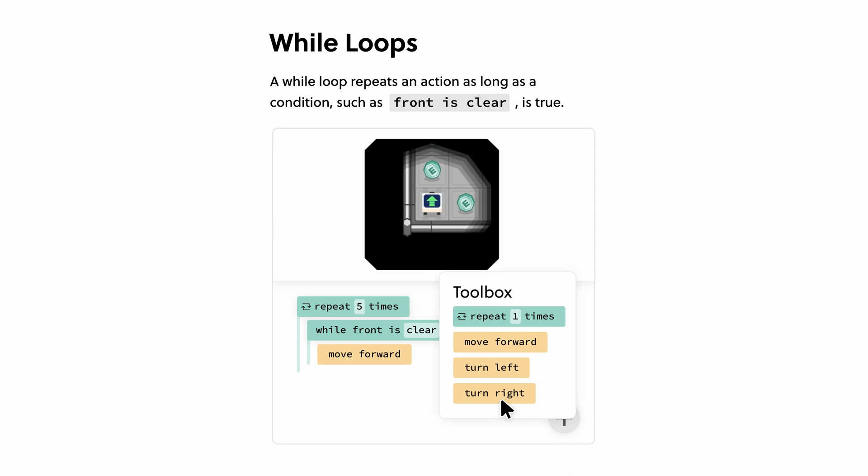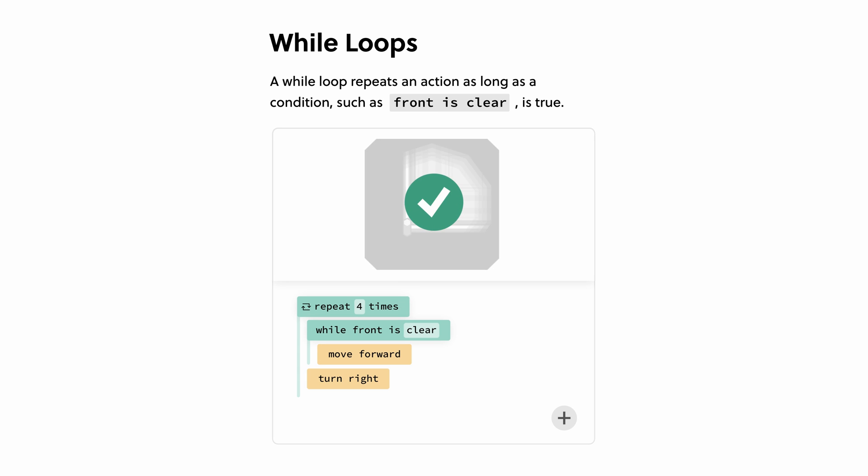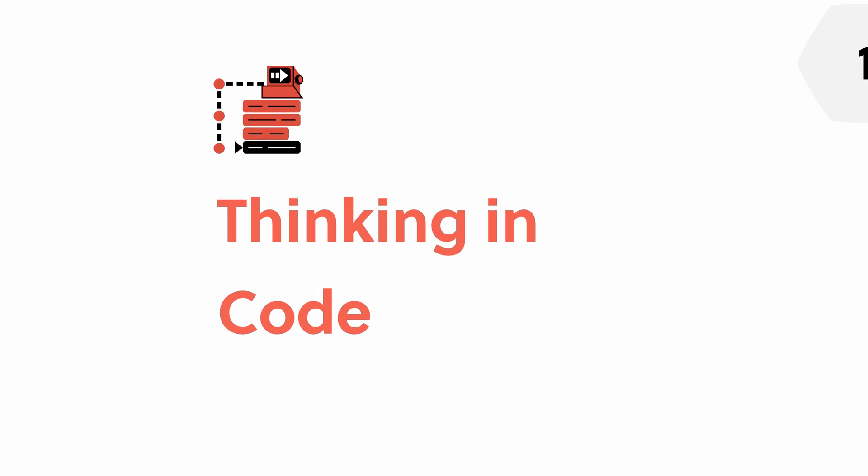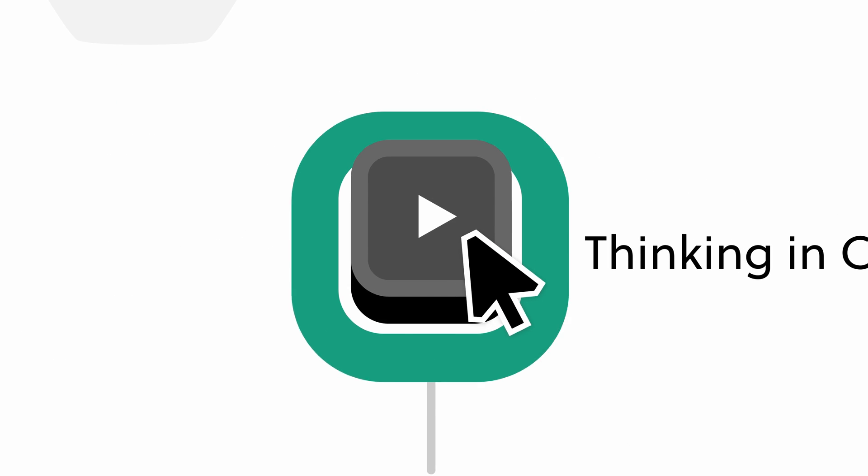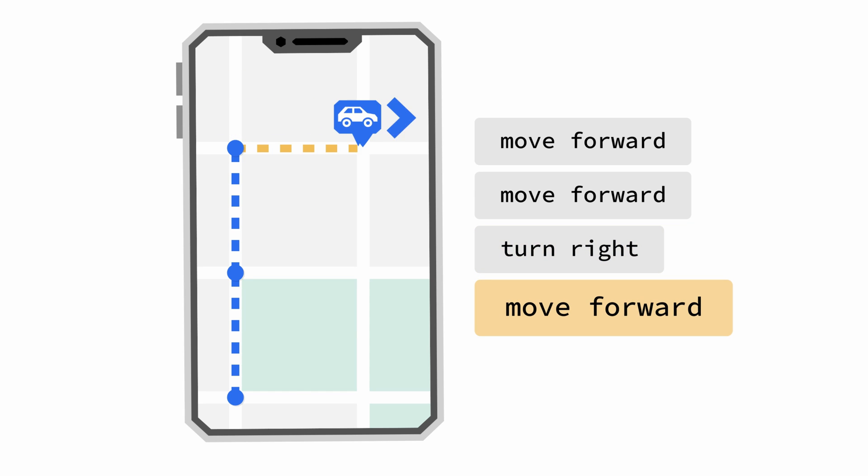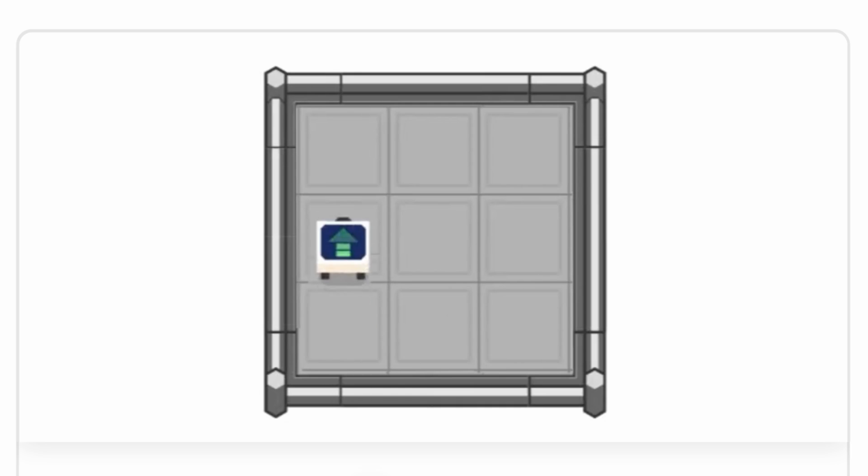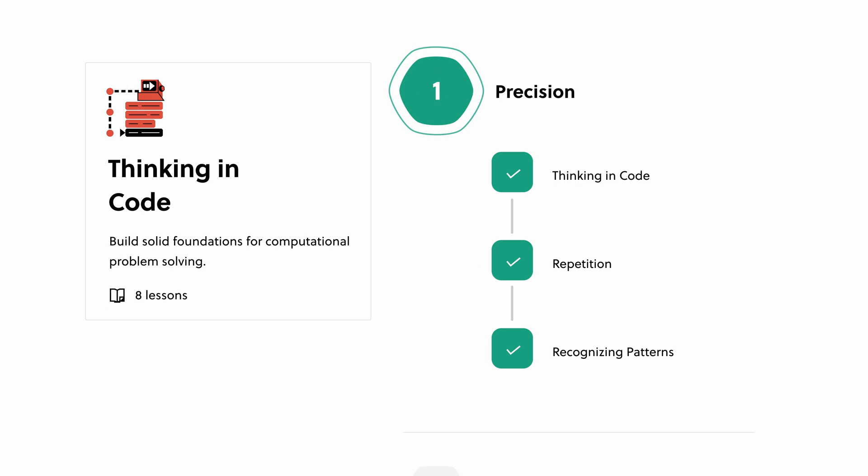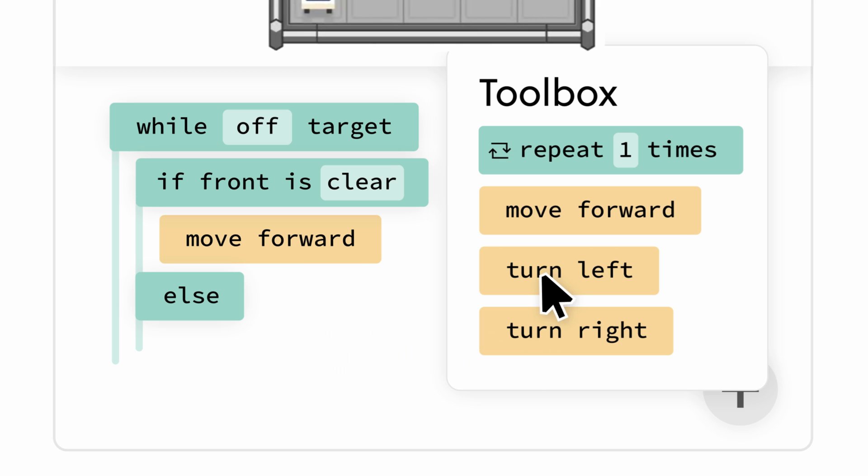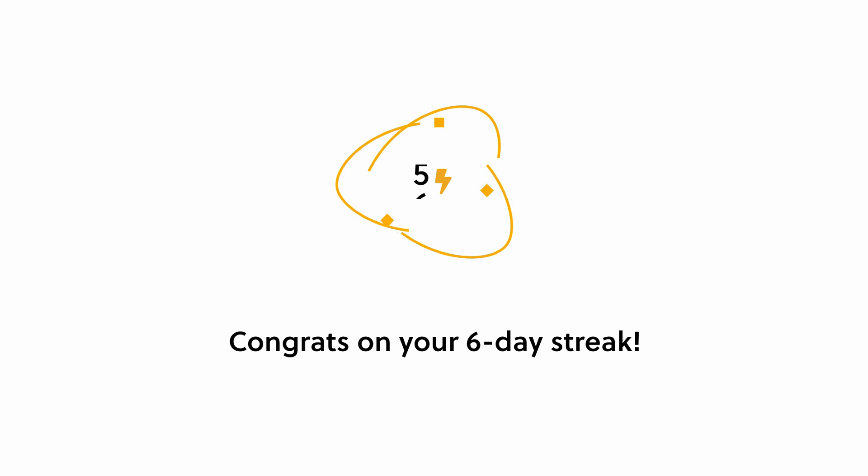For example, instead of just reading about loops, you build your own code and see it in action. With Brilliant, you build your critical thinking skills by problem solving, not memorizing, building deeper knowledge of new subjects. In the course Thinking in Code, you write your own programs step by step and watch your code run. You start with simple programs like helping a car navigate to its destination, and gradually build up to more complex programs involving conditional statements and loops. Once you're ready, you can continue on to learn Python, one of the most in-demand programming languages today.